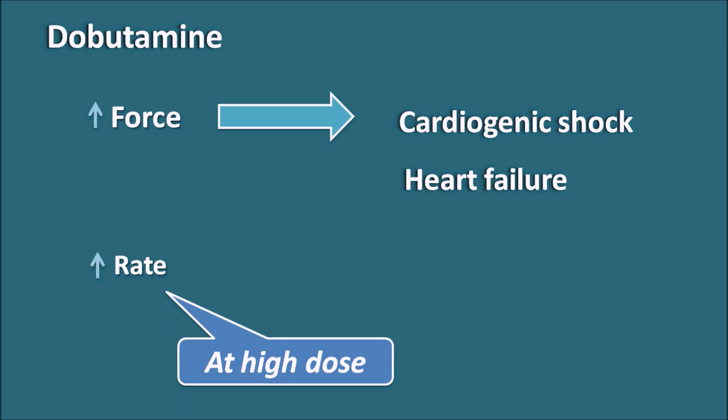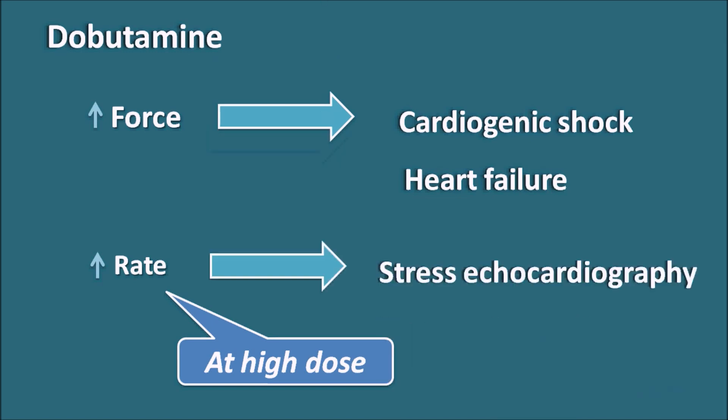As Dobutamine increases both force and rate of contraction at a high dose, it can be used in stress echocardiography, in which the Dobutamine injection is given to assess the stress response of the heart — the ability of the heart to withstand the stress caused by Dobutamine. It is used to diagnose any abnormality in cardiac structure and walls, and it proved useful when given for a short term.